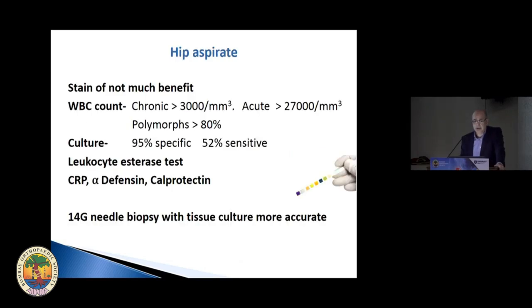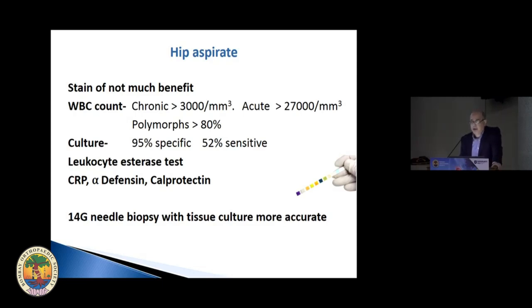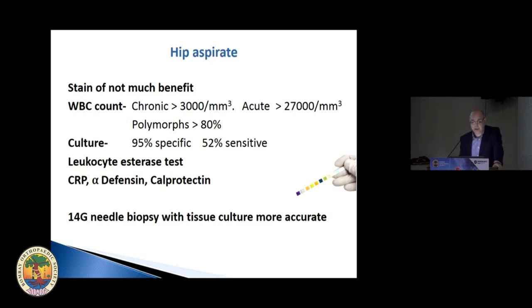What do you send in your hip aspirate? A lot of people are sending gram stain — that's totally of no benefit at all. You have to send your WBC count. For chronic infections, a positive value would be more than 3,000 per millimeter cubed with 80% polymorphs. Remember this value does not apply for an acute reaction, where the value will be much higher. A positive culture is fairly specific for infection, but a negative culture does not mean you don't have infection. From synovial fluid you can do other tests like the leukocyte esterase test, CRP, alpha-defensin, or synovial CRP. If your radiologist can use a 14-gauge needle rather than a thinner needle, your chance of getting a positive culture is much higher because you get some tissue.